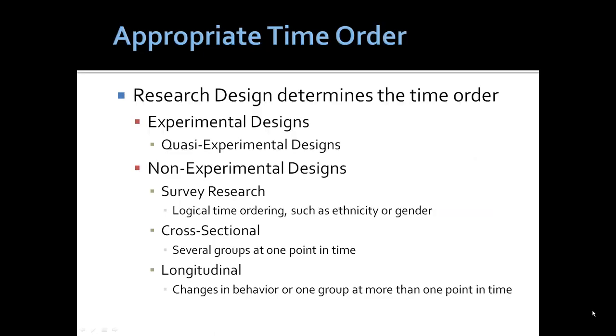The time order in an experimental design or a quasi-experimental design is not problematic because we know that the experimental condition precedes the outcome. In non-experimental design, such as typically survey research, this is a little tricky. Generally, we think of a logical time ordering, such as ethnicity or gender, not always quite so transparent. But we know, for example, that ethnicity or gender might contribute to or predict income or status. However, income could never cause gender or ethnicity.